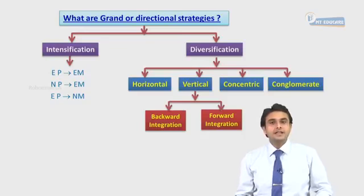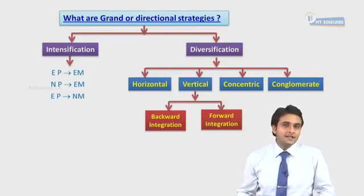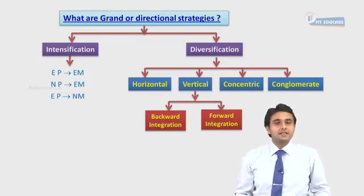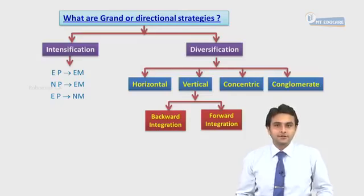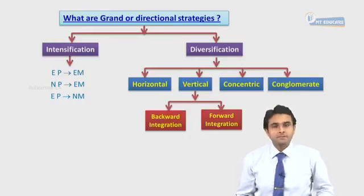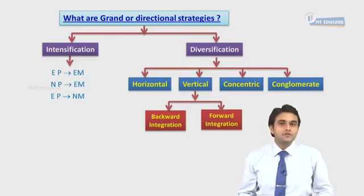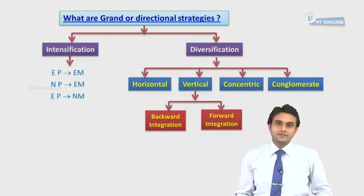Under intensification, it covers three aspects of the Ansoff matrix: existing products sold in existing markets, which is market penetration; new products sold in existing markets, which is product development; and existing products sold in new markets, which is market development. Diversification covers four basic things, starting with horizontal diversification, which means entering into businesses at the same level in the chain.